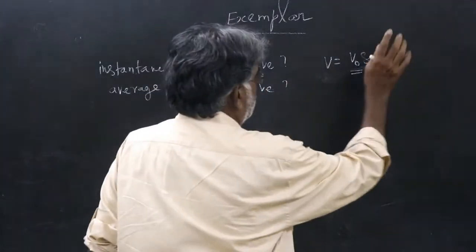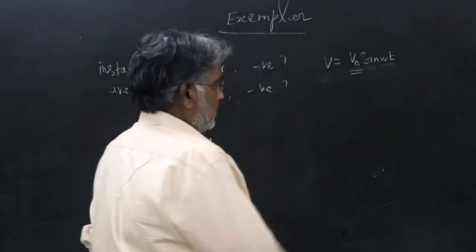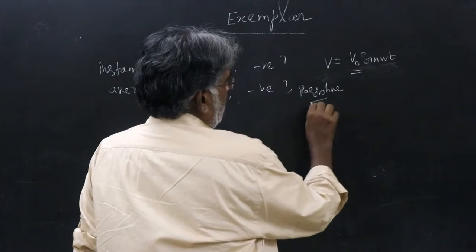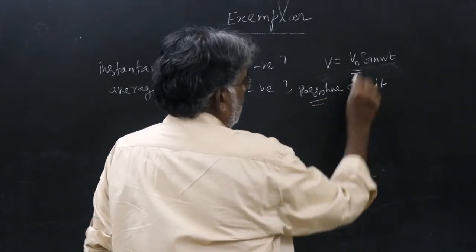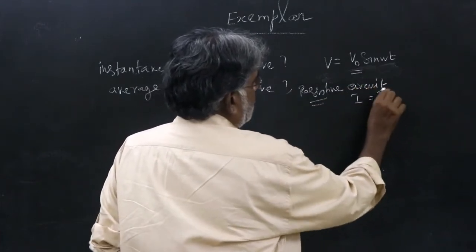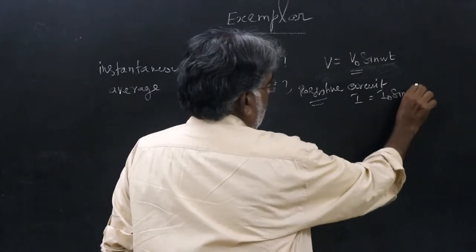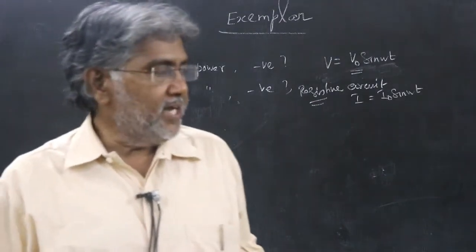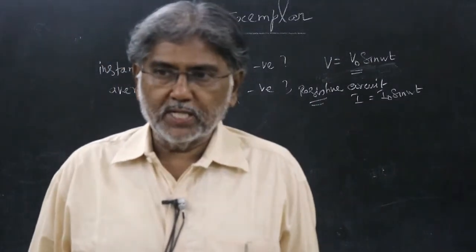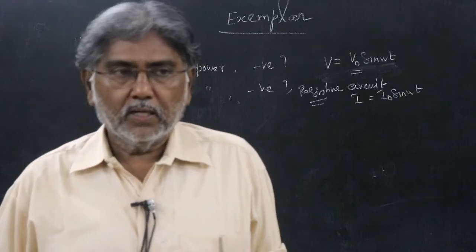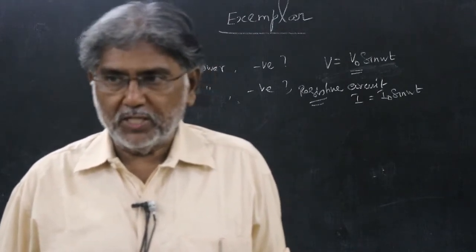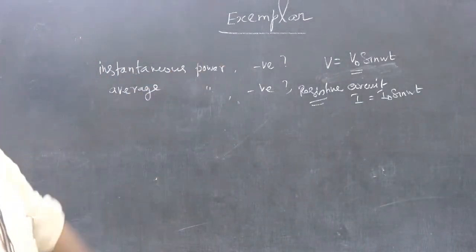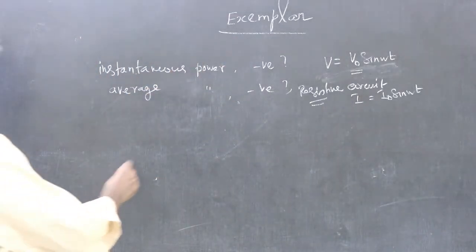For an AC source, let V = V₀sinωt. Let us consider a resistive circuit. Then I will be I₀sinωt. Can you say why? Because in an alternating current circuit containing only resistance, voltage and current will be in phase with respect to each other, meaning phase difference is zero. So V = V₀sinωt and I = I₀sinωt. The instantaneous power P = VI.